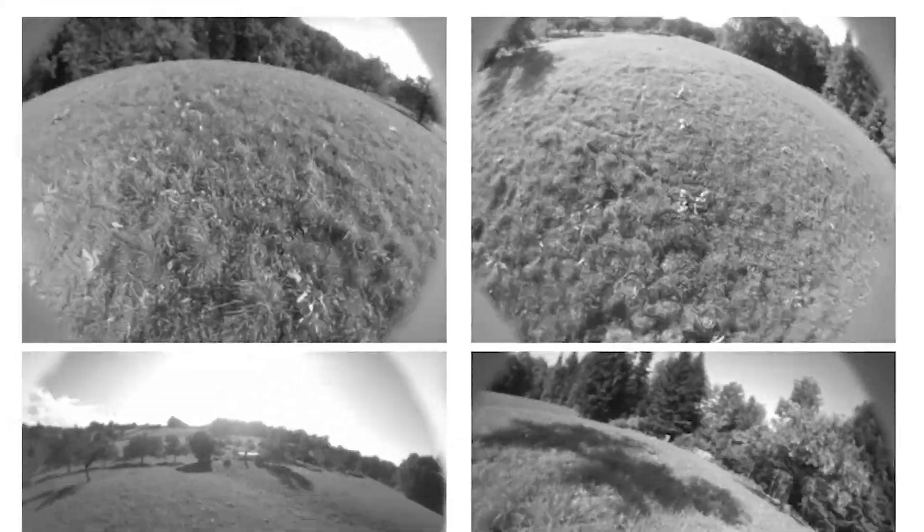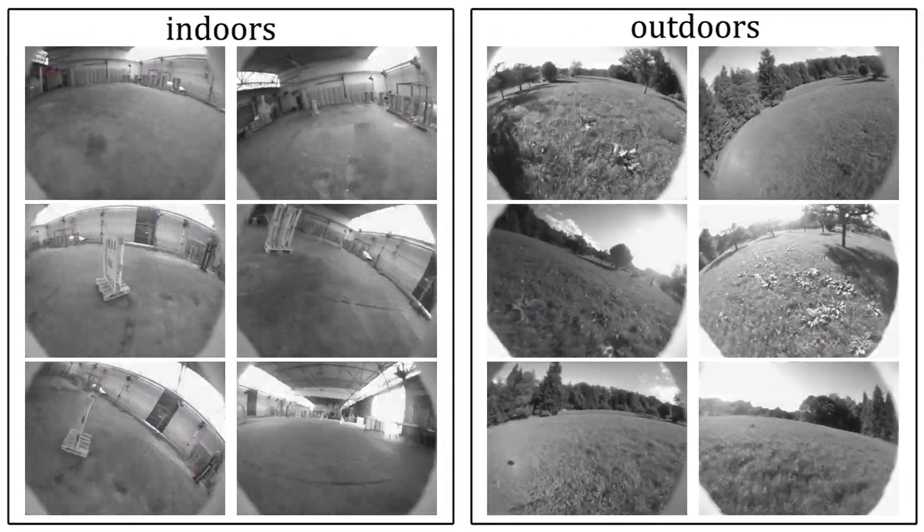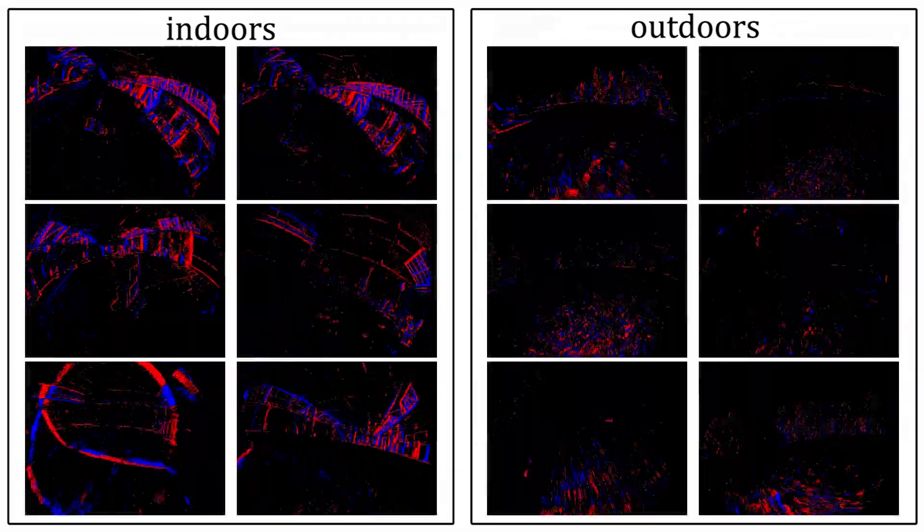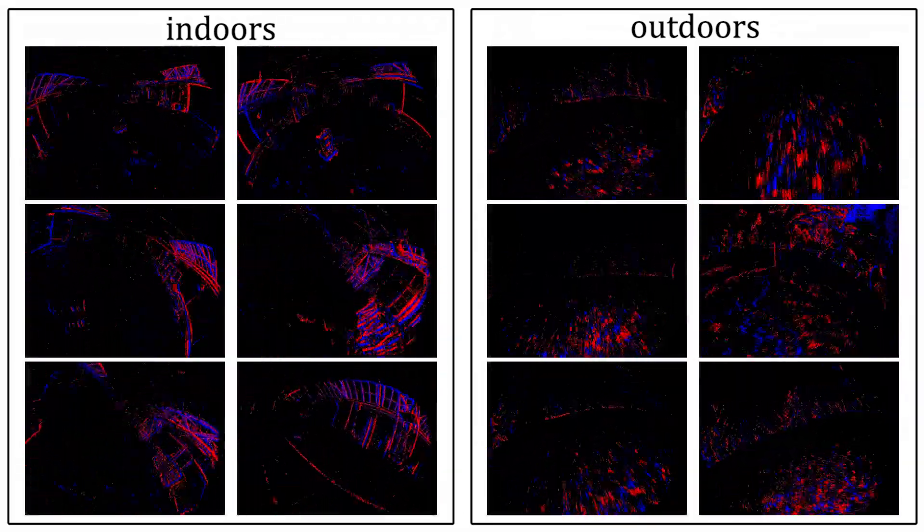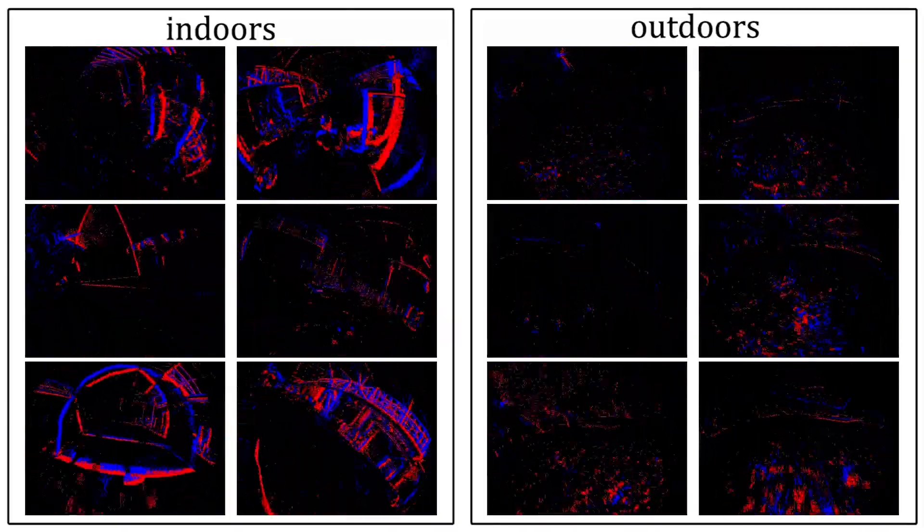For each sequence, we provide the camera images, IMU data, ground truth poses, as well as the event data from the Davis sensor. With this dataset, our goal is to help advance the state of the art in high-speed state estimation.